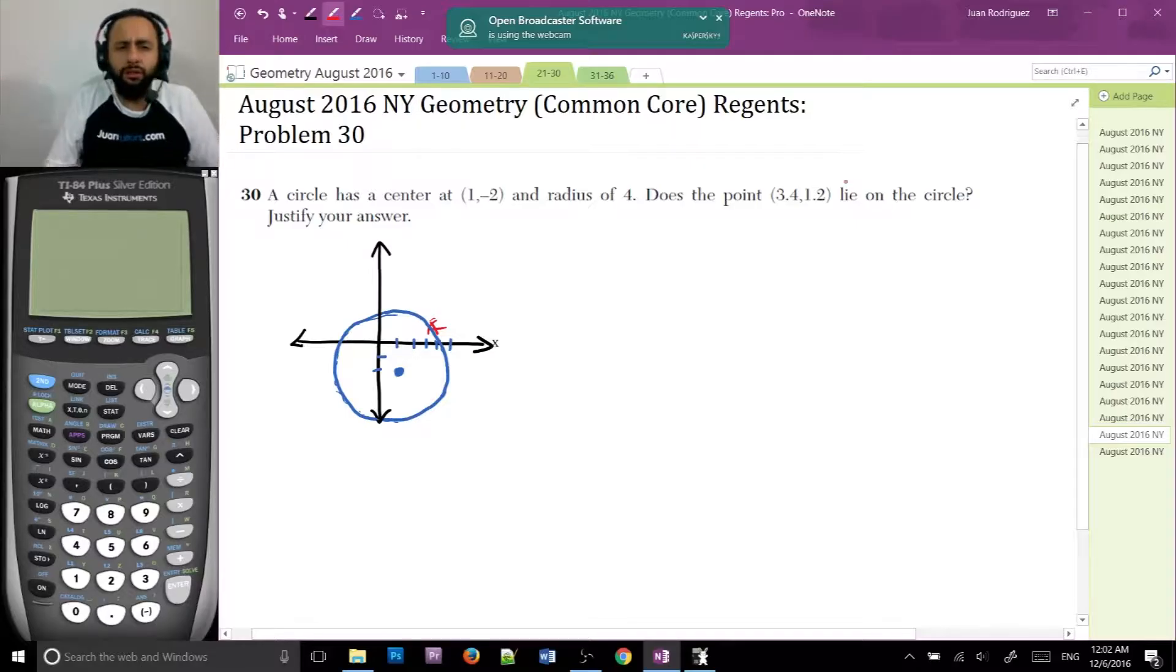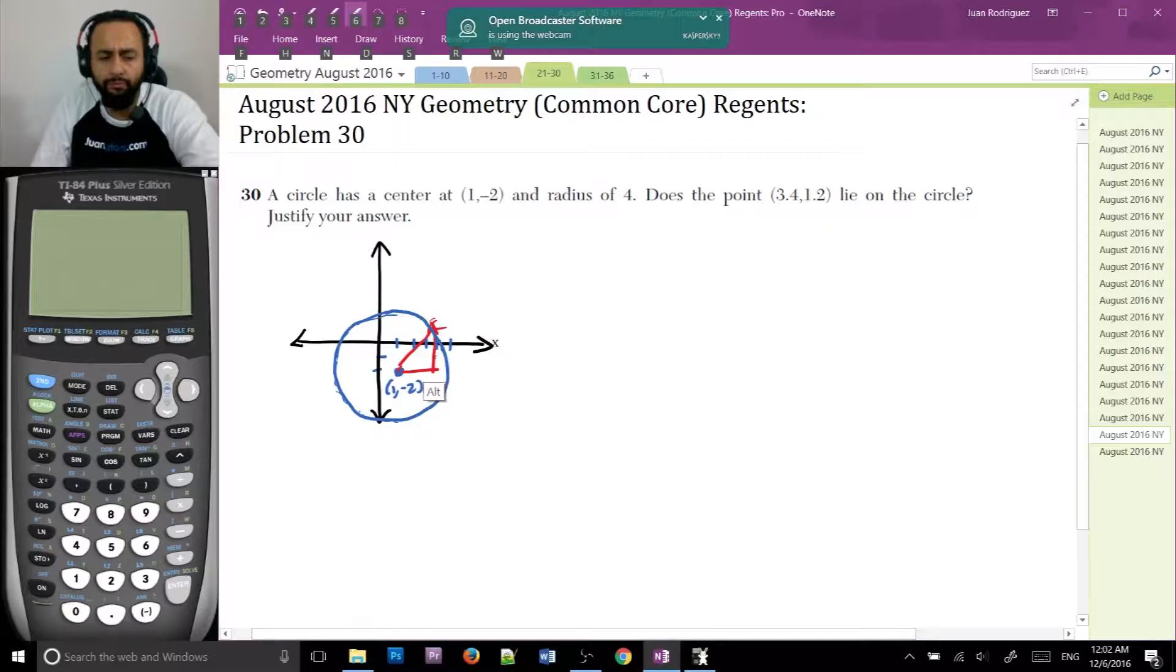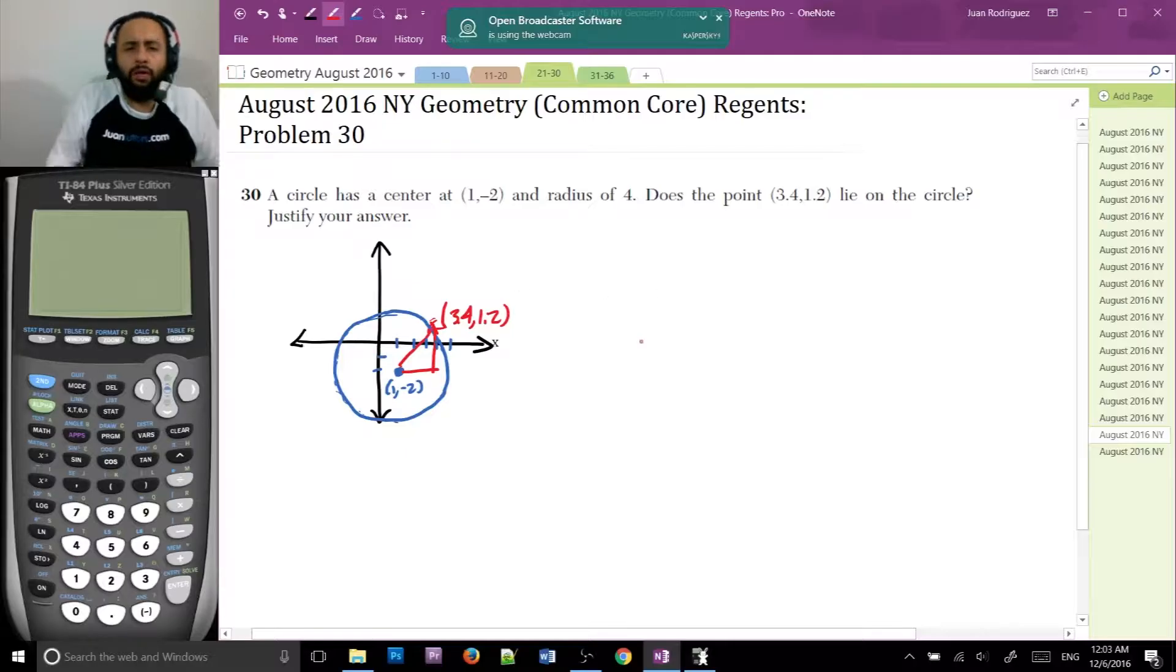Now, how do we possibly do that? Well, there is the distance formula. And that's how we're going to do this problem. But that's kind of my point is that if you don't realize the distance formula, you definitely want to do whatever you can do to get some geometric intuition on this problem. It's a circle, right? This thing is a circle. What do the points on a circle have in common? What do they have in common?